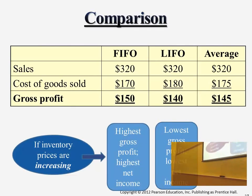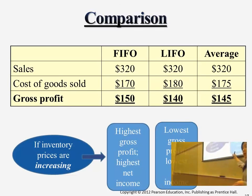Under LIFO, the advantage is that since gross profit is the least, when it comes to taxes, you will also be paying the least taxes compared to using FIFO. So in the case that a company wants to conserve some cash — if they think their operations are more tight — they may decide to use LIFO in terms of inventory costing to save some money. So there are benefits to each method.